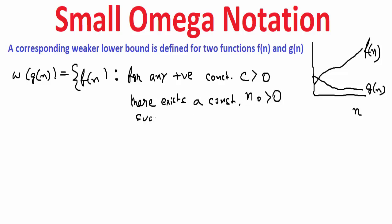such that zero must be less than or equal to c g of n, and this must be less than or equal to f of n, for all n greater than or equal to n₀.